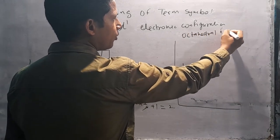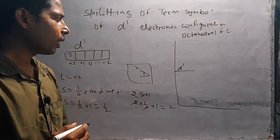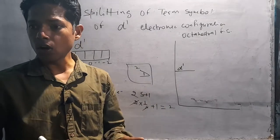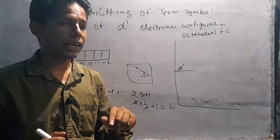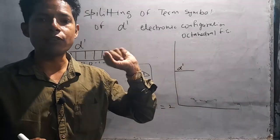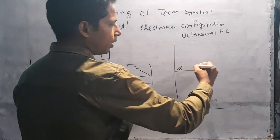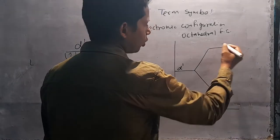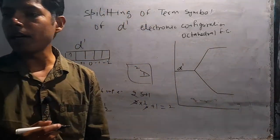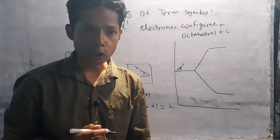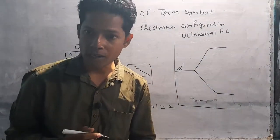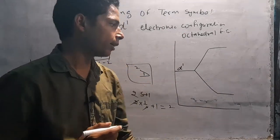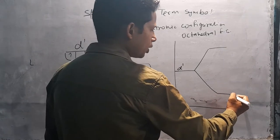Octahedral field strength में हमने CFT में पढ़ा था कि t2g की energy कम होती है और eg की energy ज़्यादा होती है। Same way यहाँ भी दिखाएंगे। तो octahedral field में low energy वाले t2g नीचे होंगे और high energy वाले eg ऊपर होंगे।